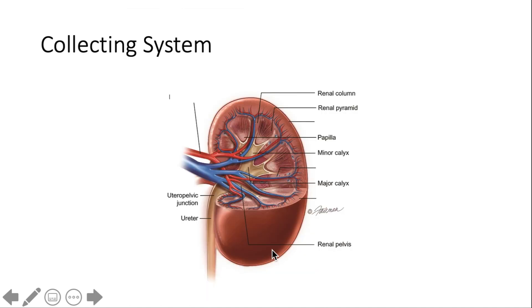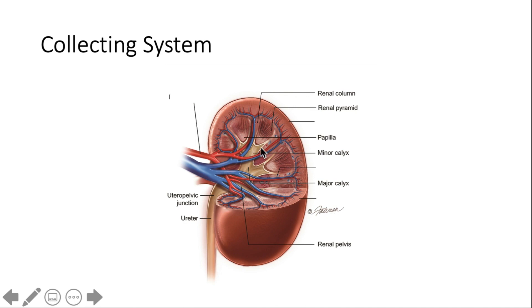We also need somewhere for urine to go. Urine is made in the nephron and the collecting duct, then sent out through the renal pyramid down into the minor calyces, which combine to make the major calyces. All the major calyces combine to form the renal pelvis. From there, urine exits and travels down the ureter into the bladder.